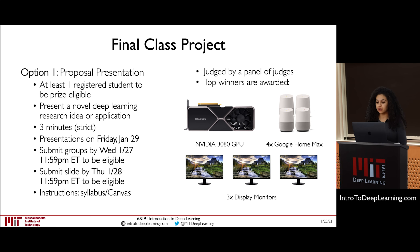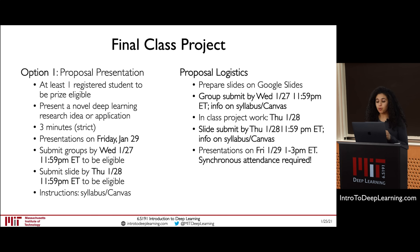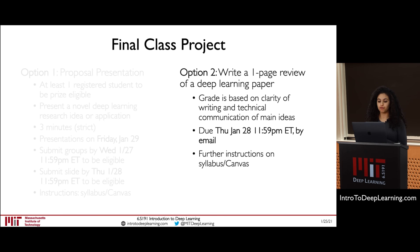Top winners will be awarded prizes including NVIDIA GPUs and Google Homes. Synchronous attendance is required on Friday January 29th from 1 to 3 PM eastern time to participate in the final proposal competition. The second option for credit is to write a one-page review of a deep learning paper, evaluated on completeness and clarity, due by Thursday midnight eastern time. Further information is available on Canvas.